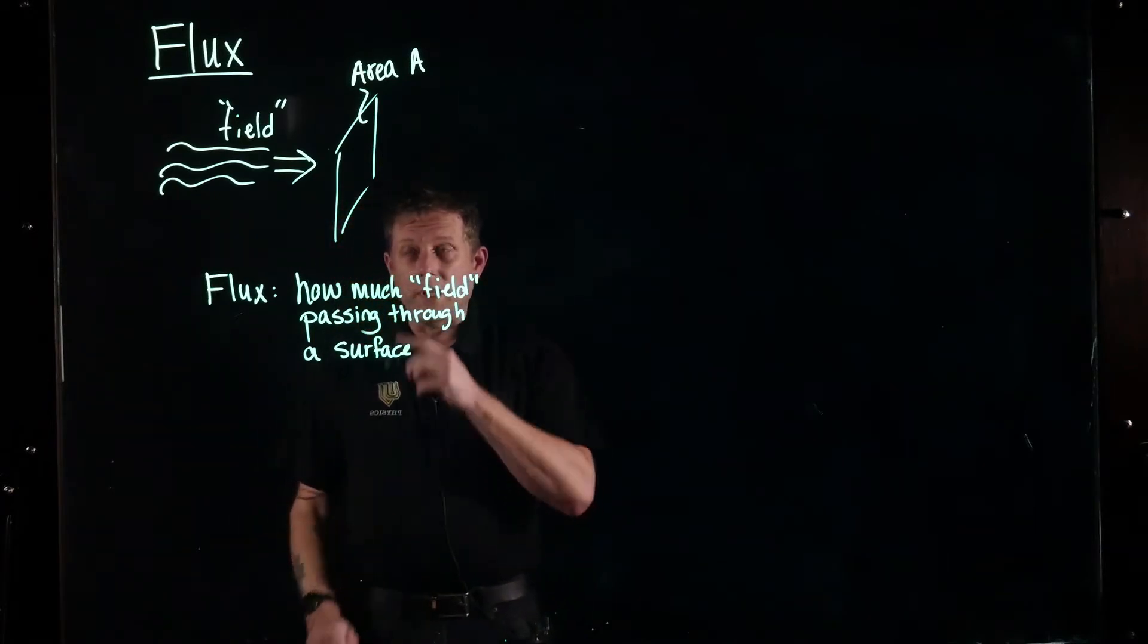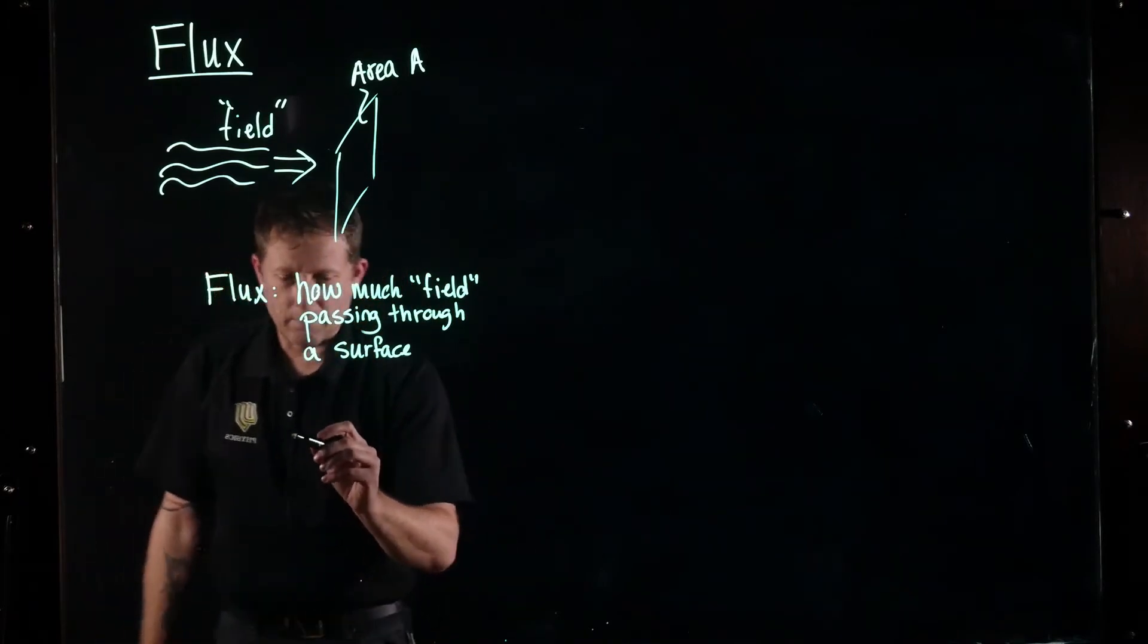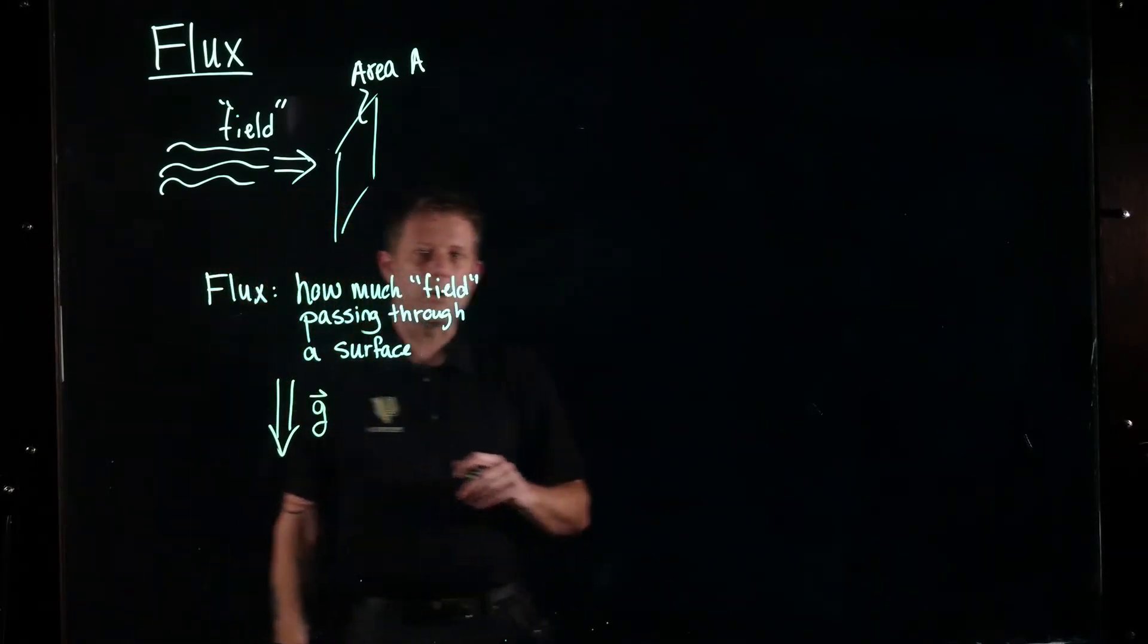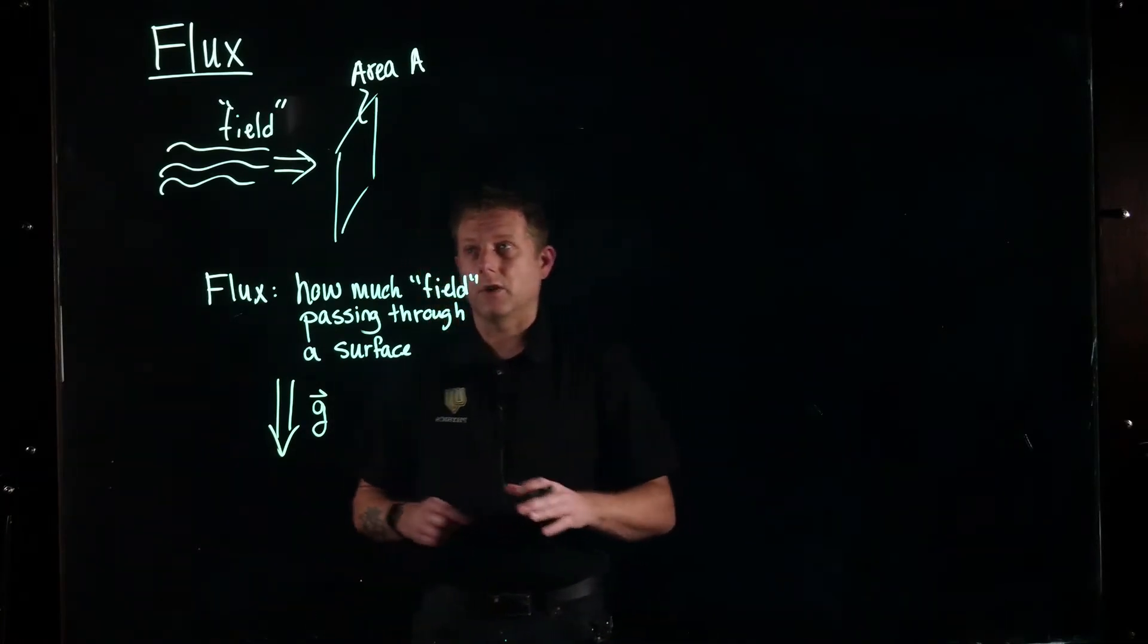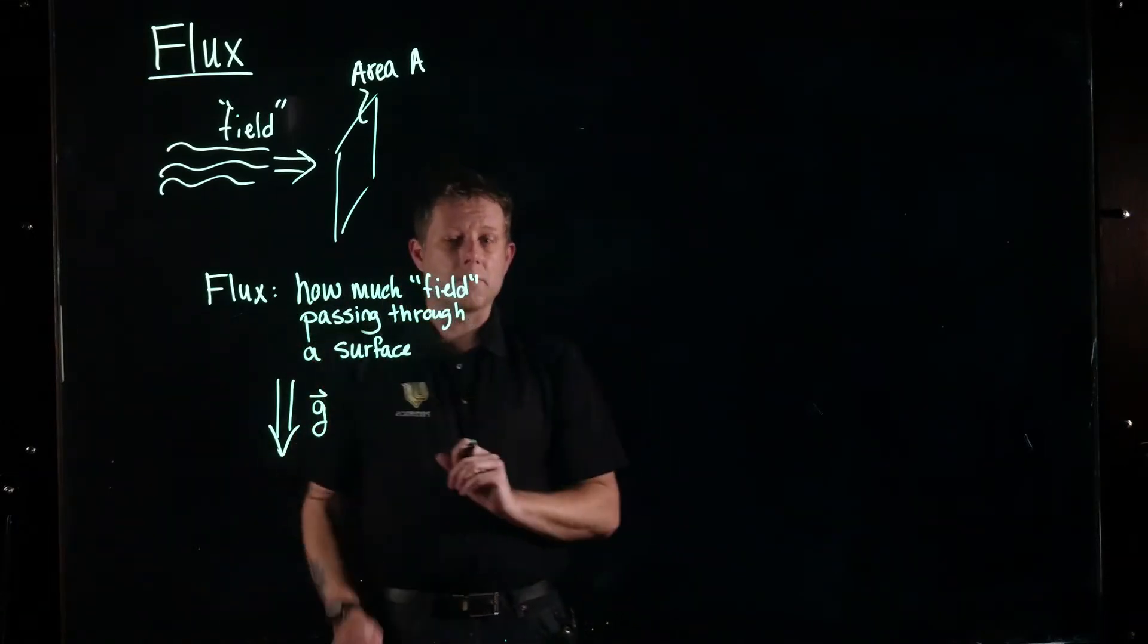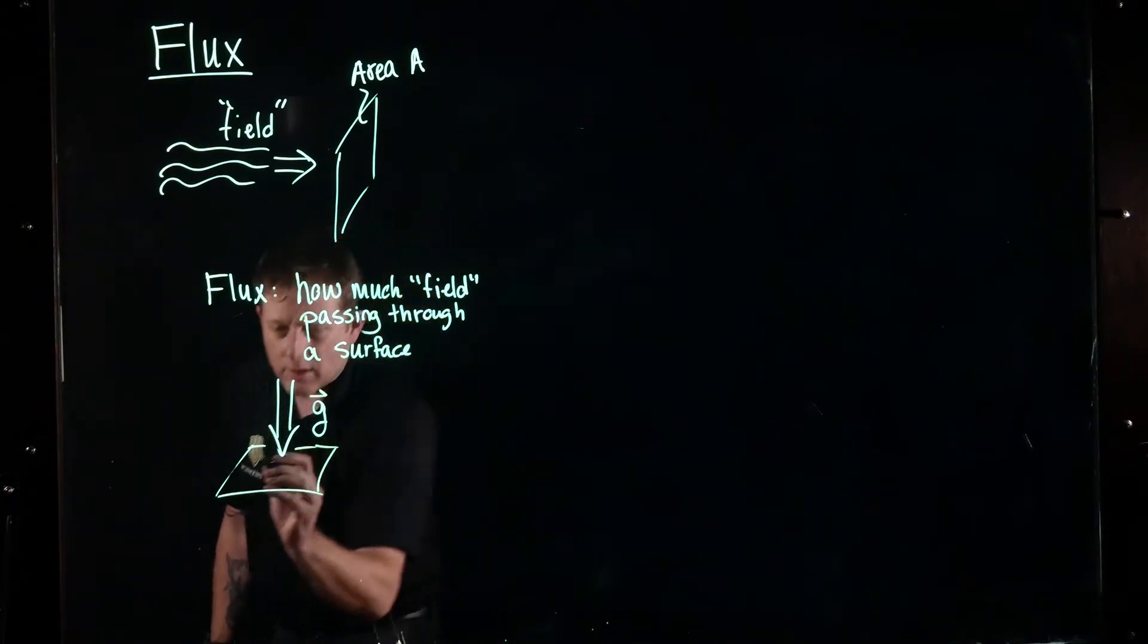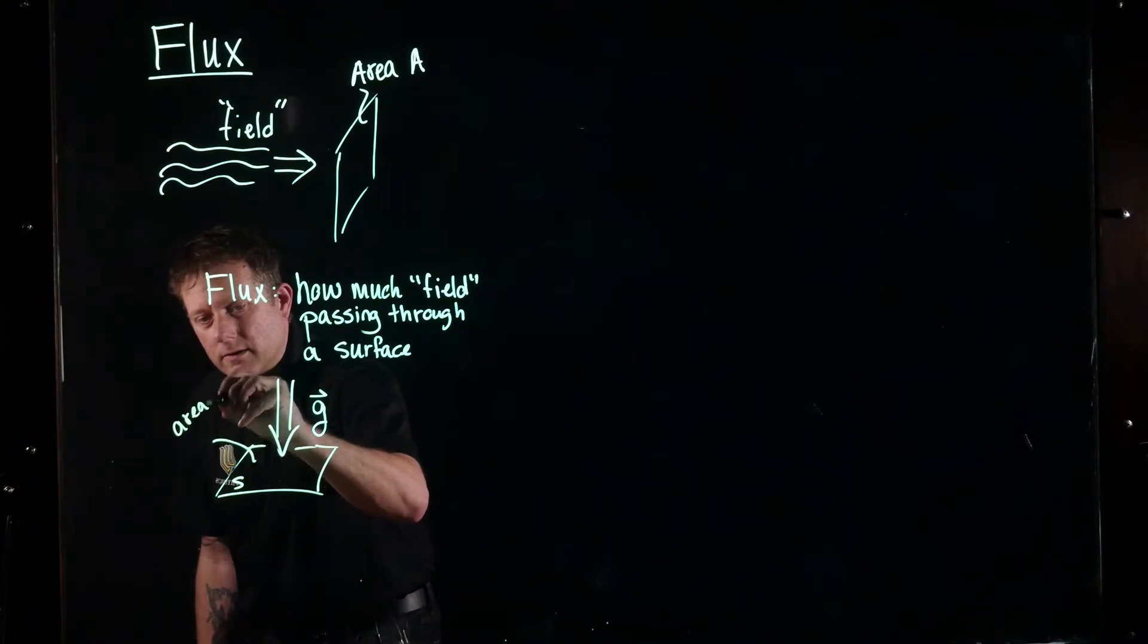We need to have some sort of a way to express that field. Let's take another example here. Let's say we have a gravitational field. We know from physics one we can denote that gravitational field with a letter G, and that's a vector field. Now we put a surface here, a rectangular surface, call that surface S. We're going to give it some area A.